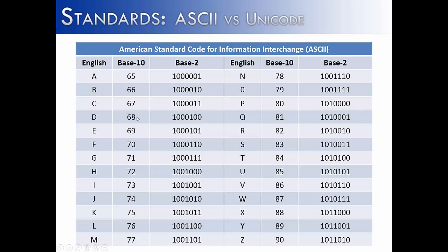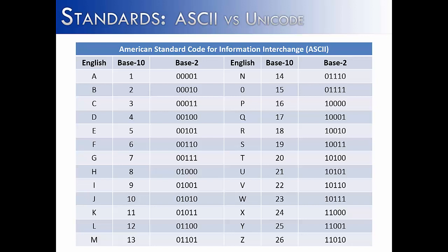You might be asking why they started at 65. These people were actually ingenious, because look what happens when you remove the first two binary digits from the base 2 value of A. It might not be impressive in binary, but it is certainly impressive in base 10 — you get the number 1, 2, 3, 4, 5. So I can look at any of these and say, if I convert this series of 1's and 0's into base 10, I can see that the first value in the English alphabet is A, or the 8th value is H, or the 22nd value is V.